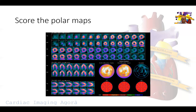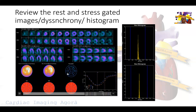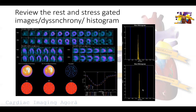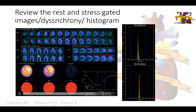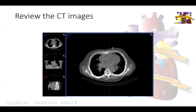We go back to the gated images in the traditional fashion. We look at the histogram for rest on the bottom, stress on top. There is not much ectopy here to talk about. Ejection fraction is normal, volumes are normal, complete normal contractility of all chambers including the right ventricle, as you can see in the horizontal long axis.